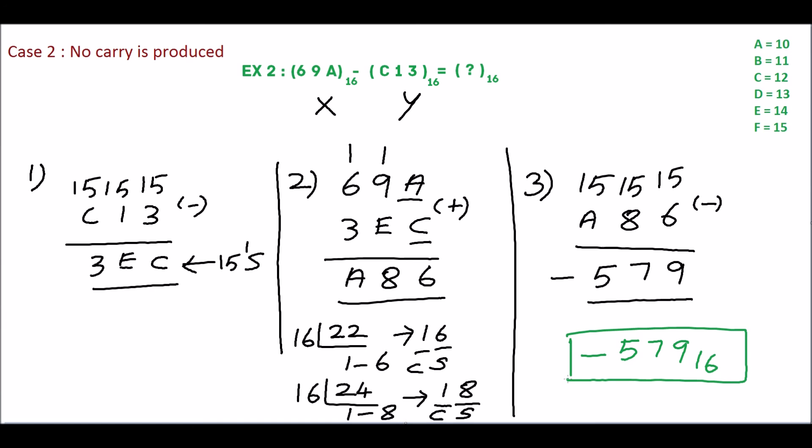We will summarize the steps. First, find the 15's complement for the subtrahend. Then add the first number and 15's complement of the subtrahend. In step 2, if the carry is produced, add the carry with the LSB of the sum. Otherwise, take 15's complement for the sum and assign the negative sign. Thank you.